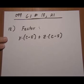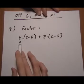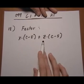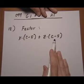So if one of the pieces that's being multiplied to both of them is common, we can pull it out as a common factor. So if we look at the first term here, we have x times (c-5). Then we have plus z times (c-5).